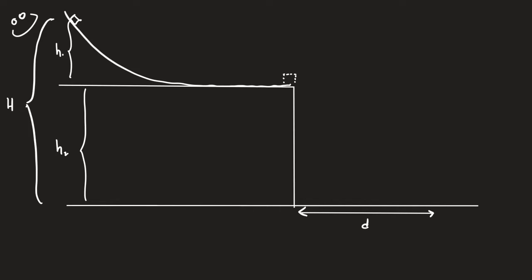Therefore, if H1 is increased, H2 must decrease. That's an important constraint: H is a constant. H1 plus H2 equals H, so when one changes, the other automatically changes. You have to keep that in mind.